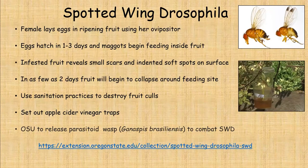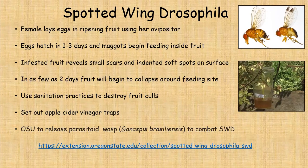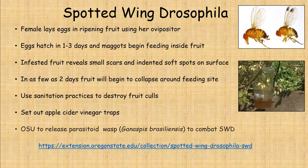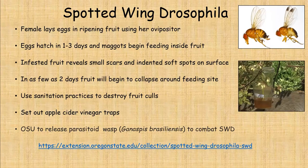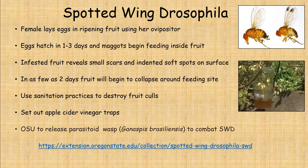For the spotted wing drosophila, the female lays her eggs in ripening fruit using her ovipositor, which looks like a stinger. The eggs hatch in one to three days and the maggots start feeding inside the fruit. The infested fruit reveals a small scar or soft indentation on the outside. In a few days the fruit will collapse from the feeding damage inside. You may pick a strawberry or blueberry and have it squish in your hand — open it up and look for maggots or eggs inside. If you find them, you know you have a problem.